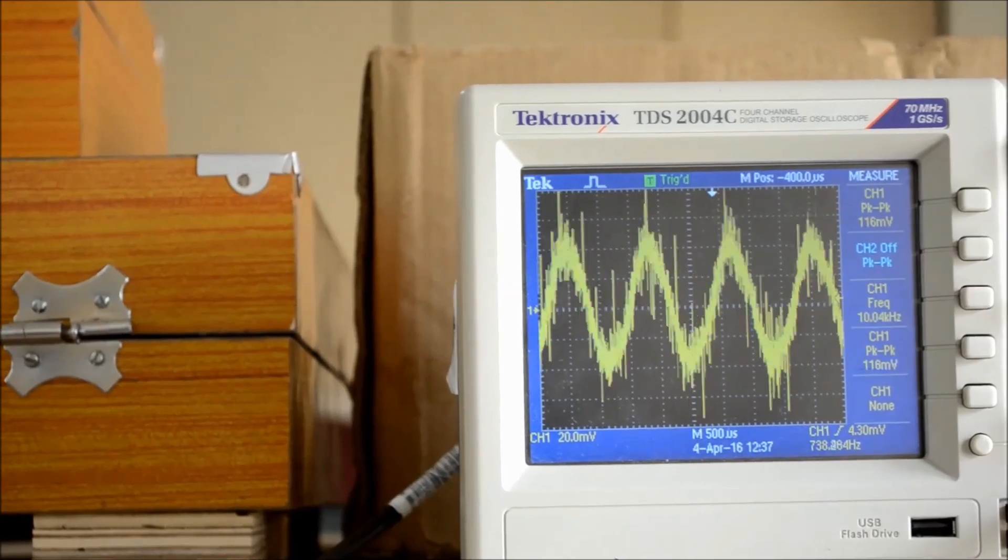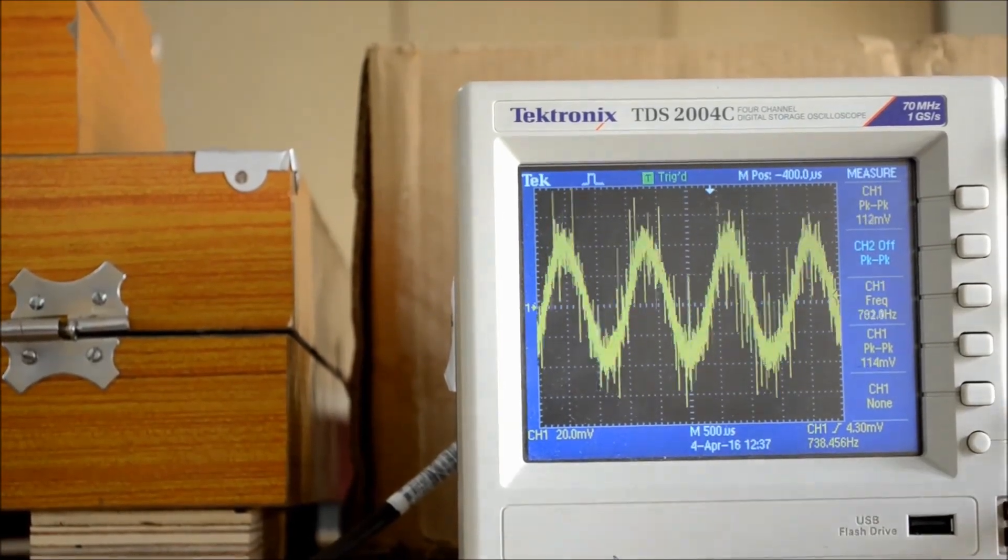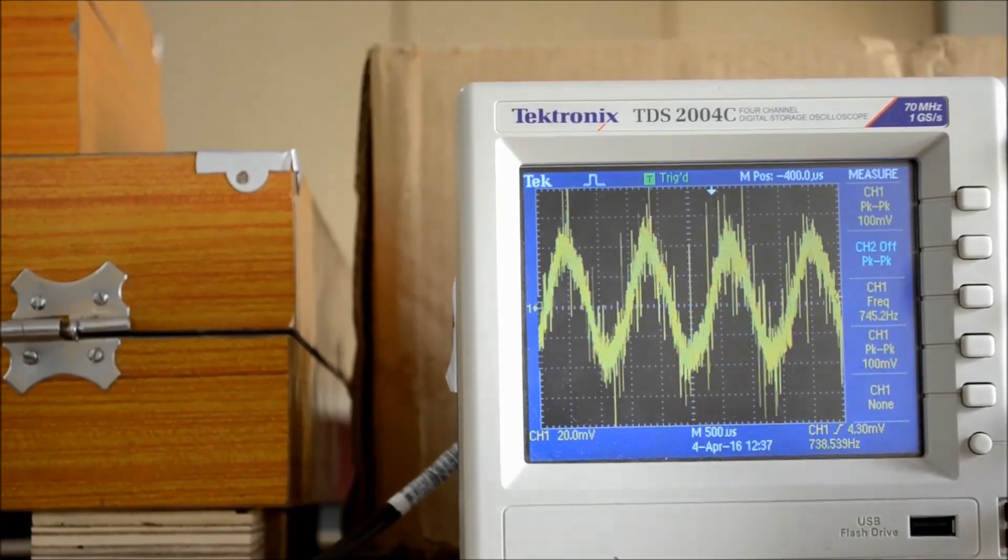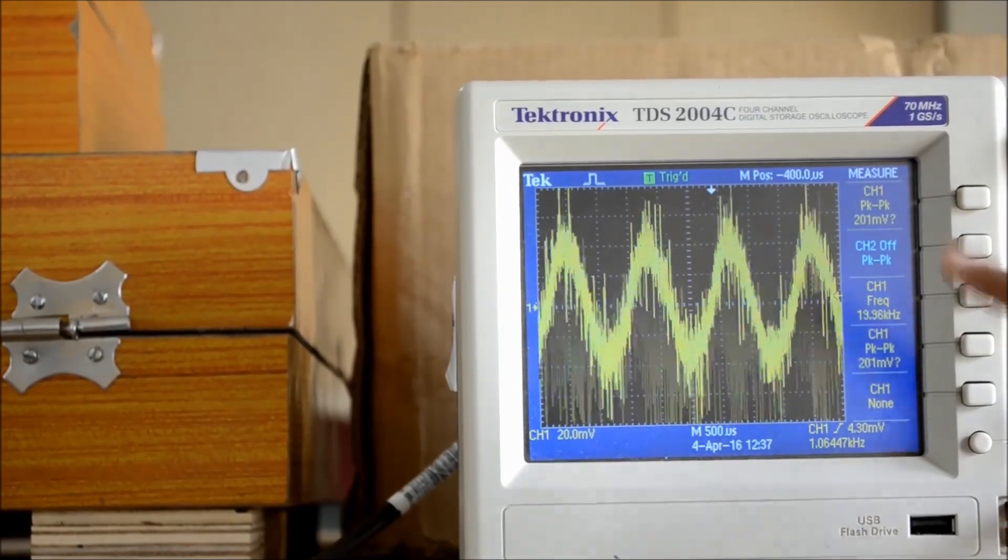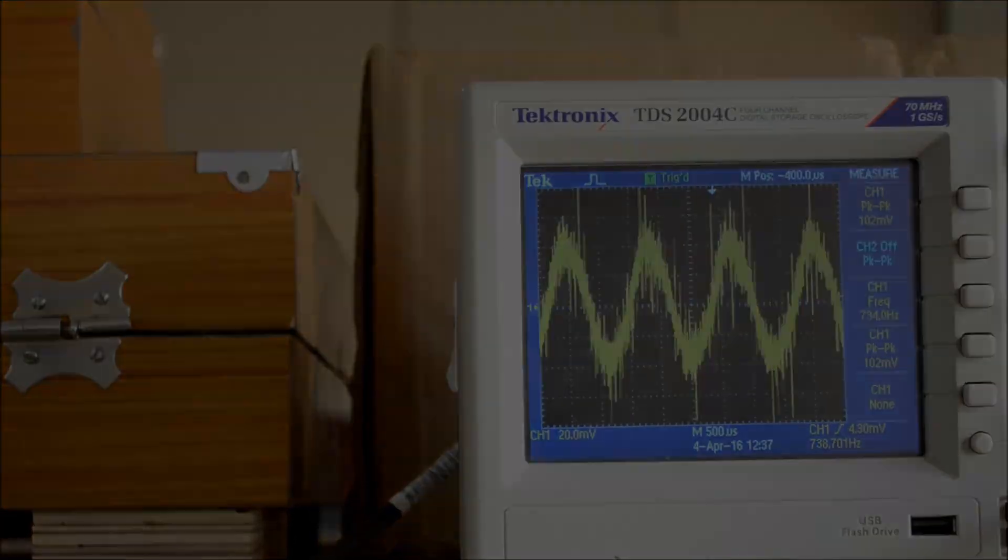And whatever the frequency and amplitude of the modulating signal, the same you are getting at the demodulated output. Here there is a reduction in amplitude because of noise in DSB-SC generation. Thank you.